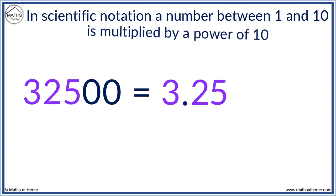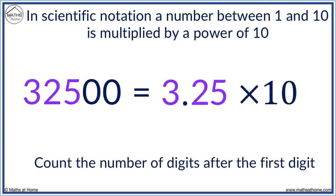We now multiply this by a power of 10. The power of 10 is found by counting the number of digits after the first digit. The first digit is 3, so we count the digits after this. We have 1, 2, 3, 4. 32,500 equals 3.25 times 10 to the power of 4.